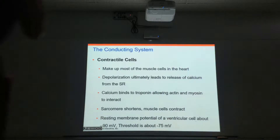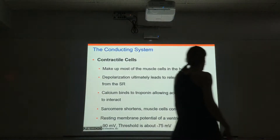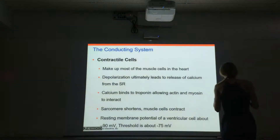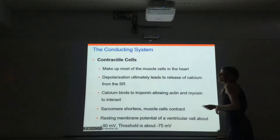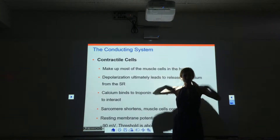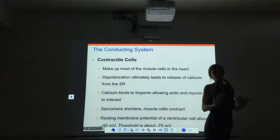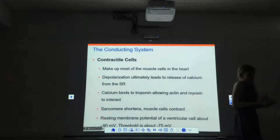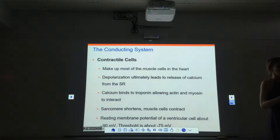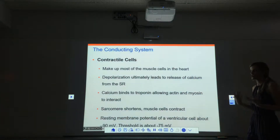The conducting cells are the electrical cells of the heart — the highly specialized cells. Now we're going to talk about the contractile cells. This is most of the cardiac muscle cells in the heart. They're contractile cells — the ones that are actually going to do the work and do the shortening or contracting.